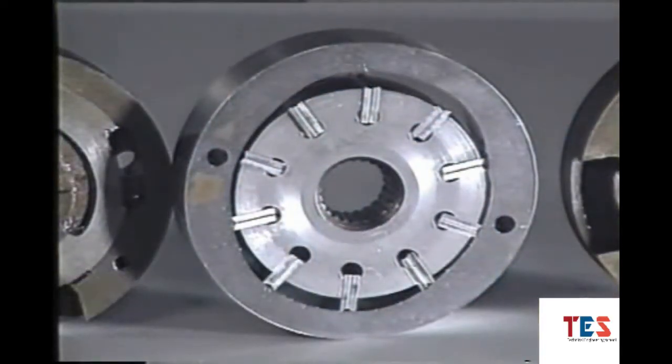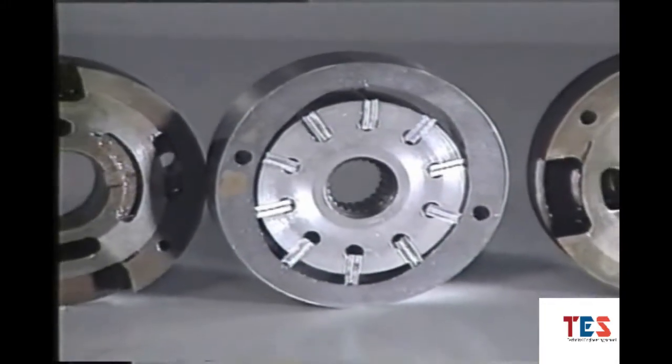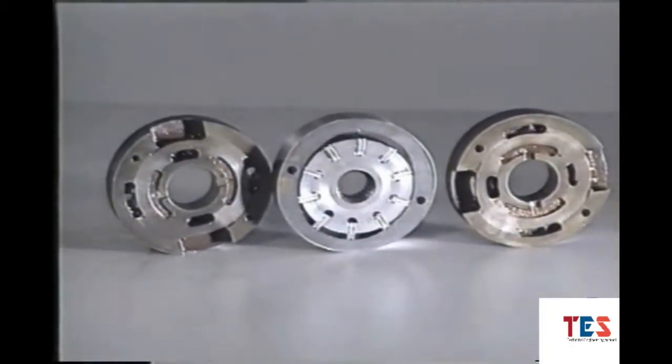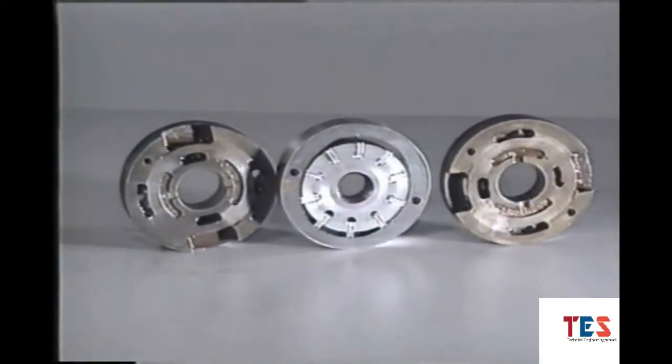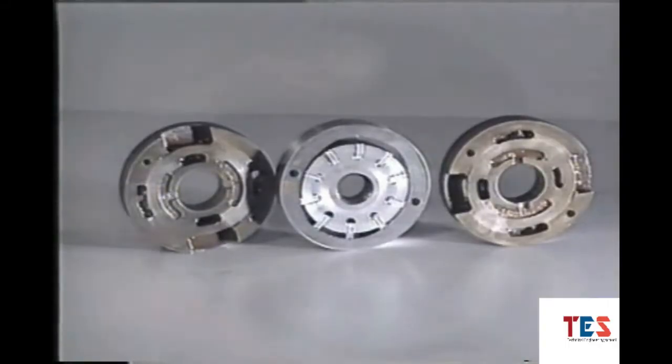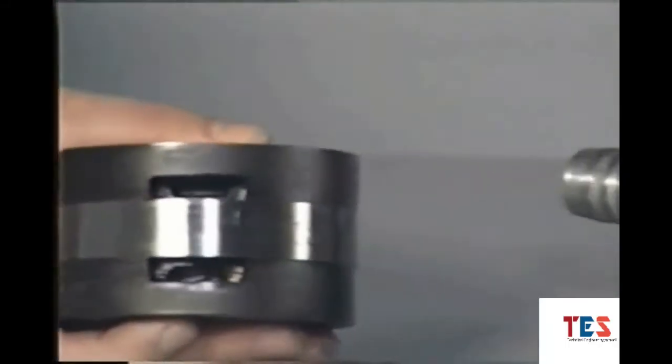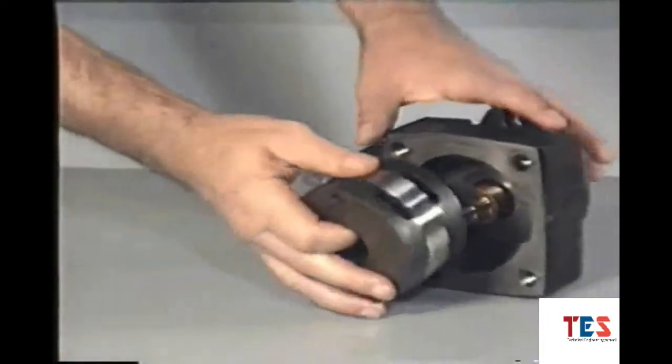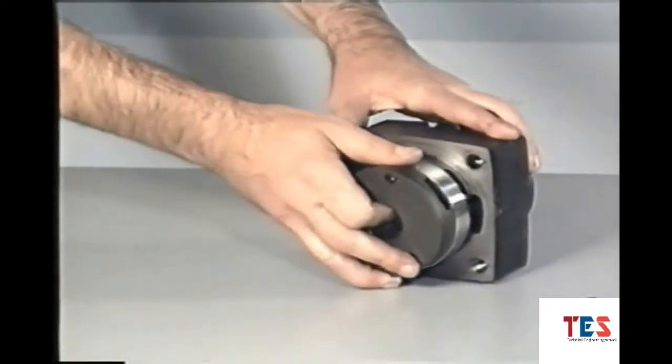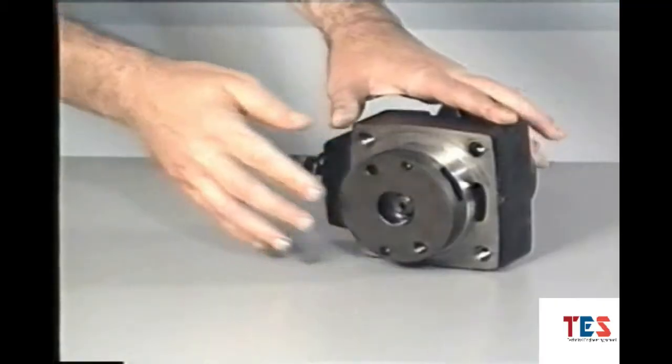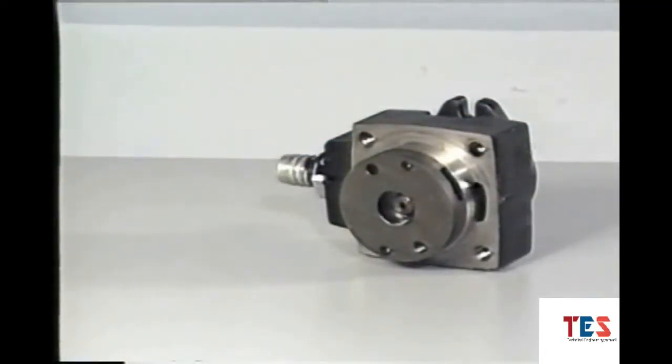Let's examine the vane pump first. The vanes fit into the rotor and slide in and out as the rotor turns inside the ring. The ring with its rotor and vanes is sandwiched between the port plates which have holes or ports. Fluid moves through these holes into the pump and back out again. The entire package is called a cartridge assembly and it's encased in the pump housing.